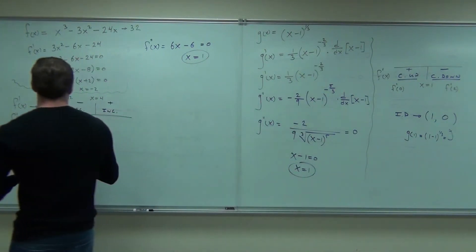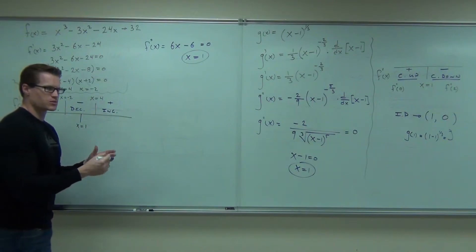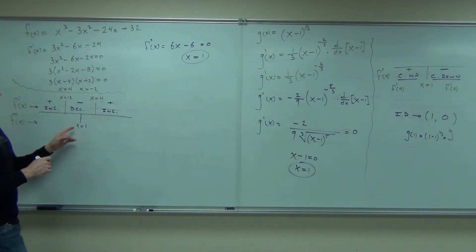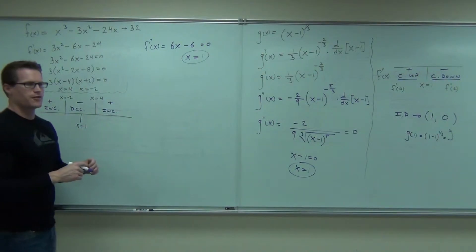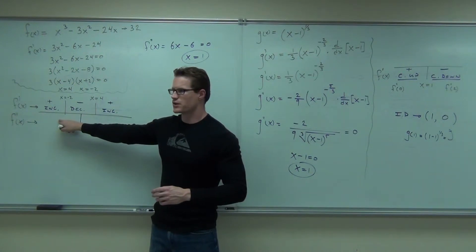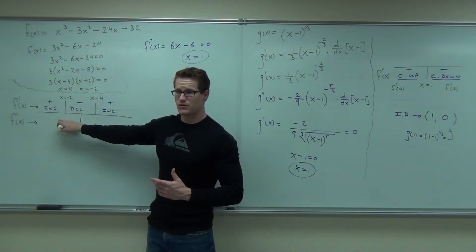Now, if x equals 1 tells us our possible inflection function, that's what that is. Let's go ahead and let's plug in some values for each interval and find out whether we're concave up or concave down. Will we plug these into the first derivative, the original function, second derivative, which one?